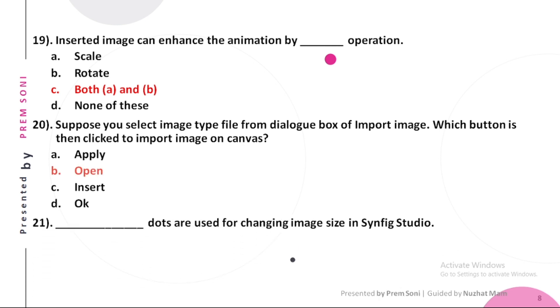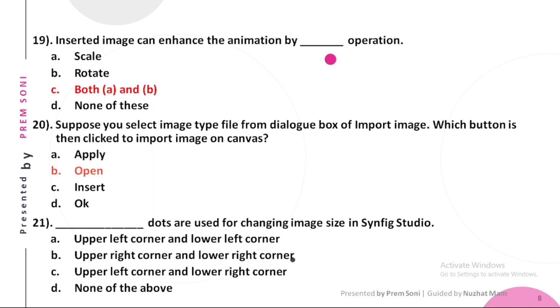Twenty-first, dashed dots are used for changing image sizes in Synfig Studio. Options are: a. Upper left corner and lower left corner, b. Upper right corner and lower right corner, c. Upper left corner and lower right corner, d. None of the above. The answer is Upper left corner and lower right corner.